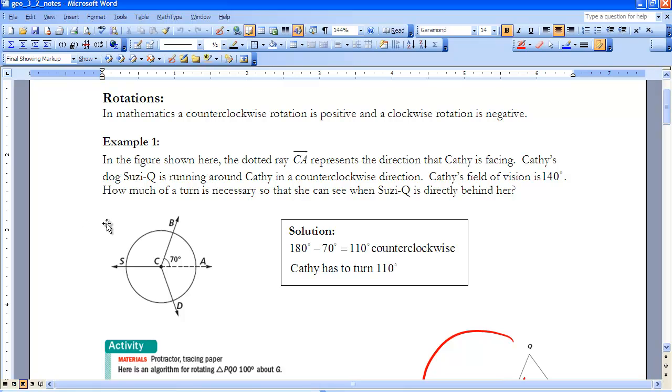Now, Cathy has a field of vision which is 140 degrees. So if Cathy is standing right here, she can see straight ahead. She can see 70 degrees this way, and she can see 70 degrees this way. So that would give her a field of vision of 140 degrees.